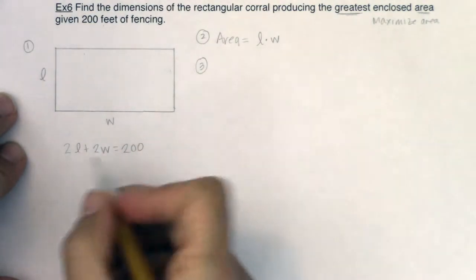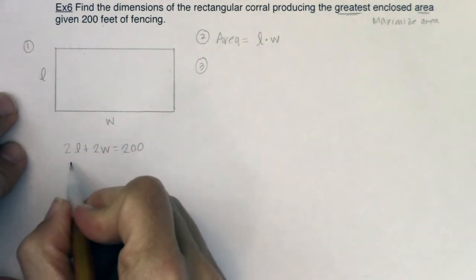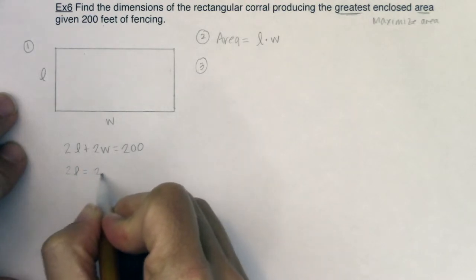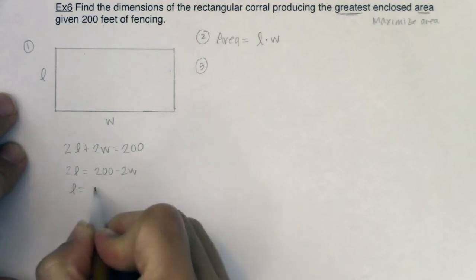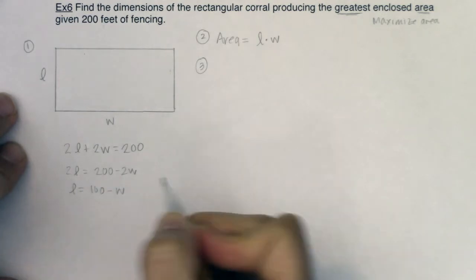I'll go ahead and just solve for length here, only because it's the first letter I see. So I know 2L will equal 200 minus 2W. And if I divide everything by 2, I will get L equaling 100 minus W.